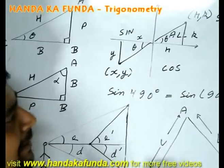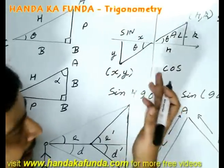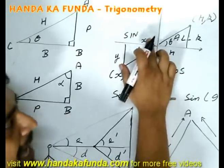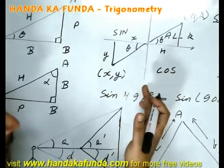What will be sin theta in this case? y by the hypotenuse. y is negative. So my sin theta is also negative. Cos theta will be x by the hypotenuse. x is negative. So negative by hypotenuse, a positive quantity, cos theta will also be negative.